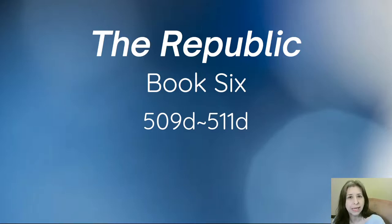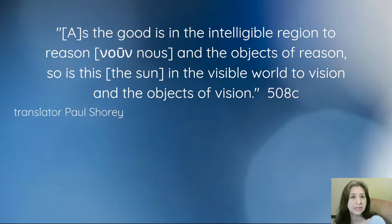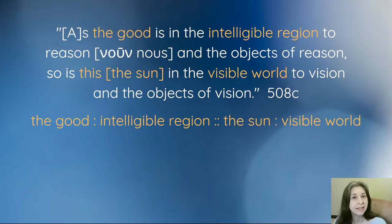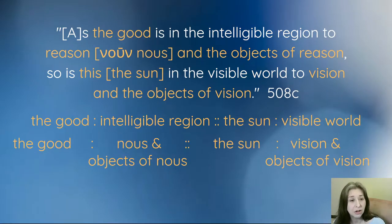Socrates was creating an analogy of the good to the sun, and he sums it up here: as the good is in the intelligible region to reason or nous and the objects of nous, so is the sun in the visible world to vision and the objects of vision. All translations I'm using come from Paul Shorey. We can make two different analogies out of this: as the good is in the intelligible region, so is the sun in the visible world, and as the good is to nous and its objects, so is the sun to vision and its objects.